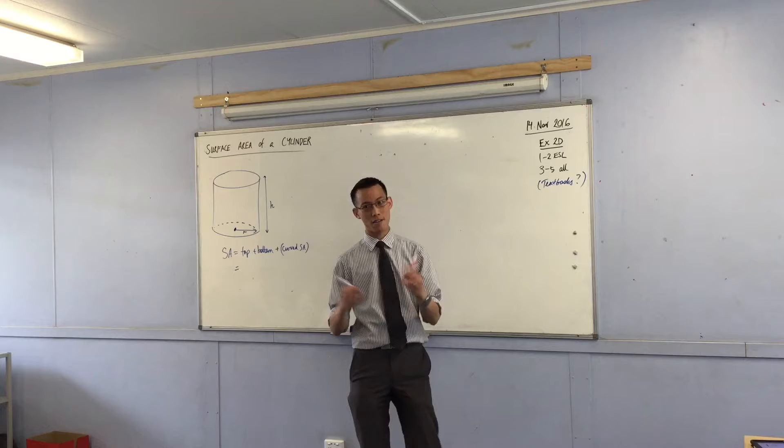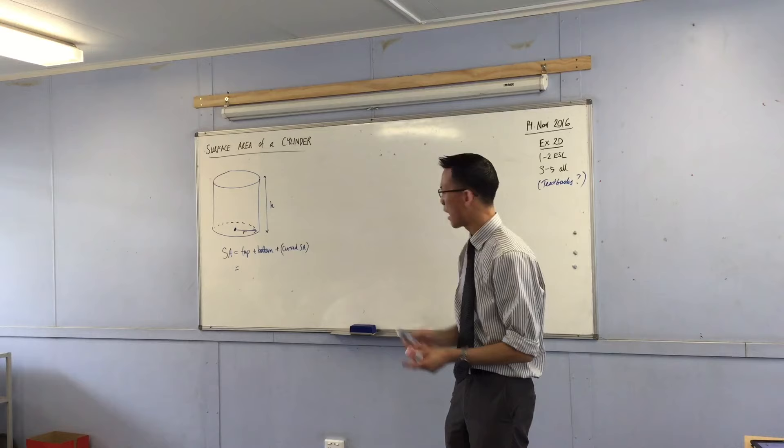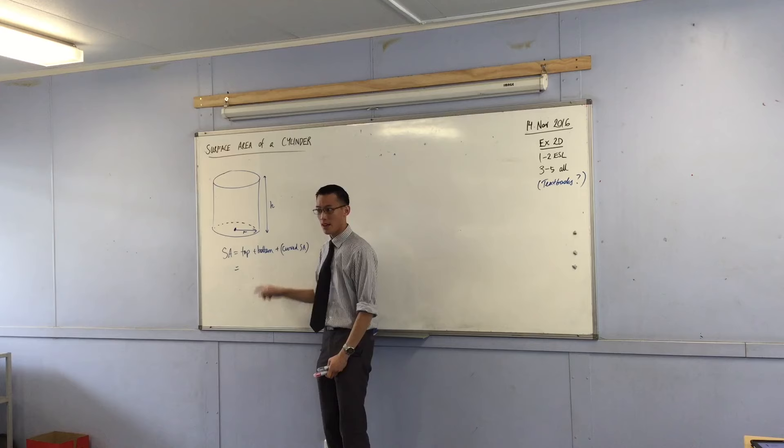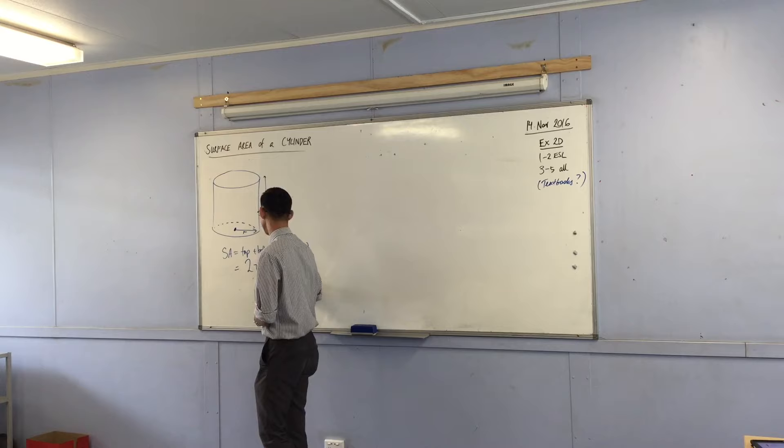Now I'll get to the curved surface area in a minute. Let's just talk about the top and the bottom. The top and the bottom are congruent to each other. They're exactly the same size and shape. At least you'd hope so if it's a cylinder. How do I work out the area on the top and the bottom? Yeah, I need the radius. What formula are we going to pop it into? It's pi r squared, right? And there's a top and a bottom. So it's actually pi r squared times 2.